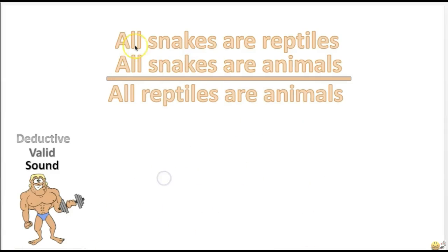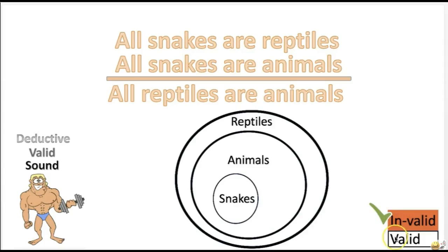Another practice problem: 'All snakes are reptiles. All snakes are animals. Therefore, all reptiles are animals.' Is this argument valid or invalid? The answer is invalid. If the snakes are inside the animals group, and the animals group is inside the reptiles group, then the premise that all reptiles are animals would be false — all the reptiles are not in the animals group. This proves the argument is invalid.